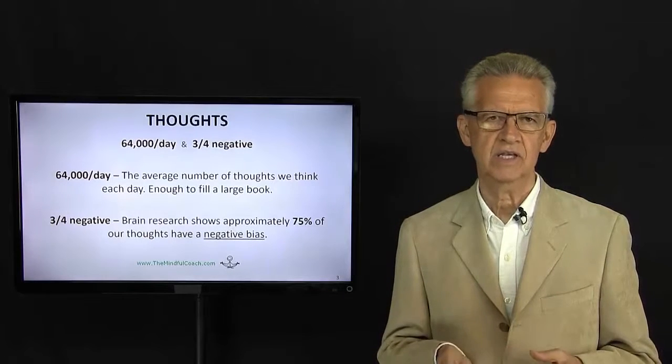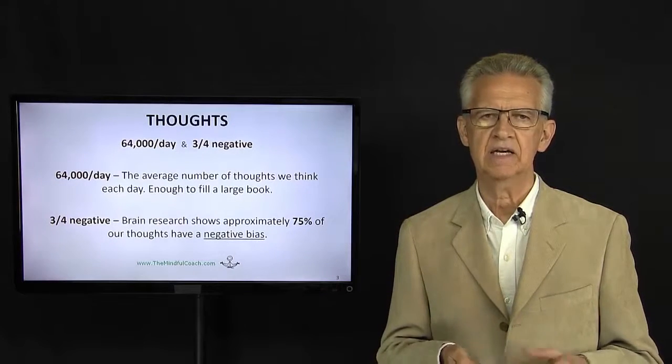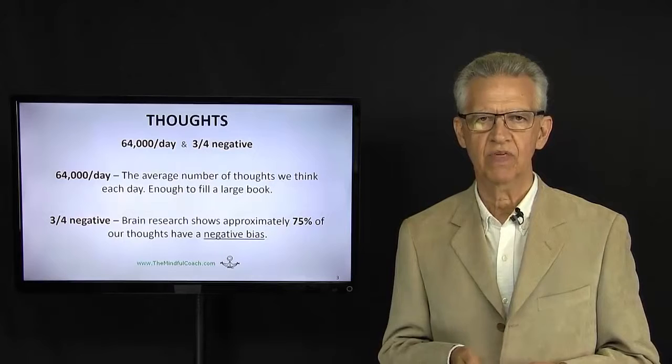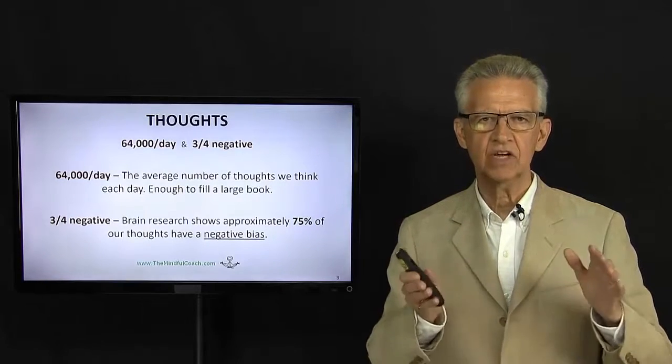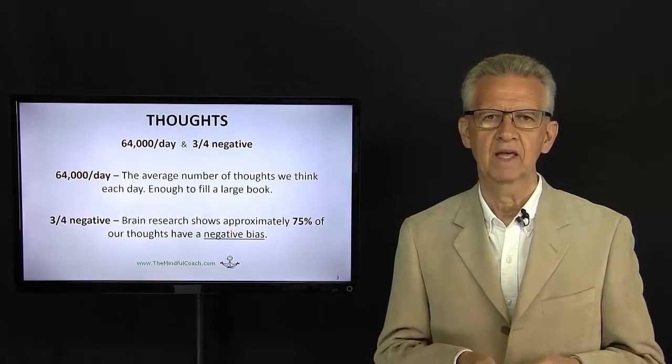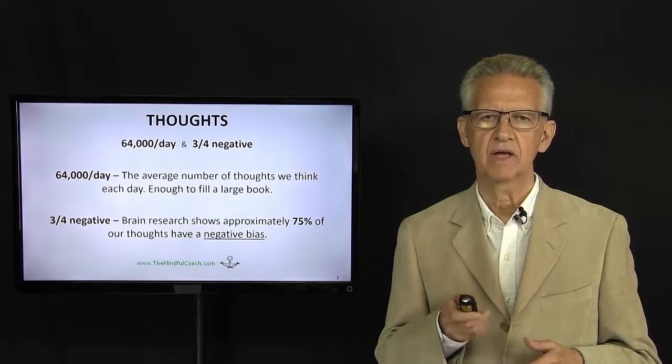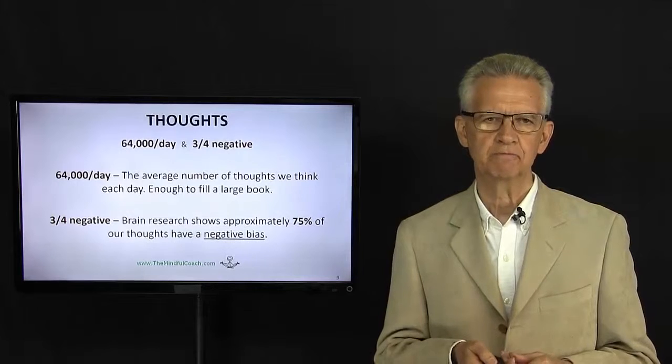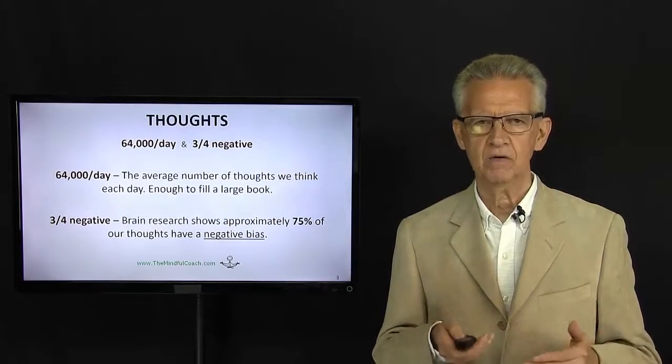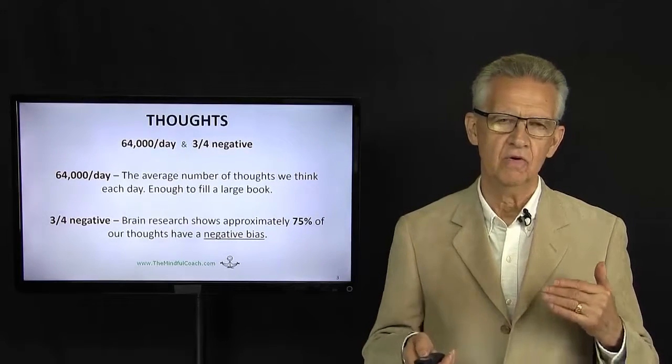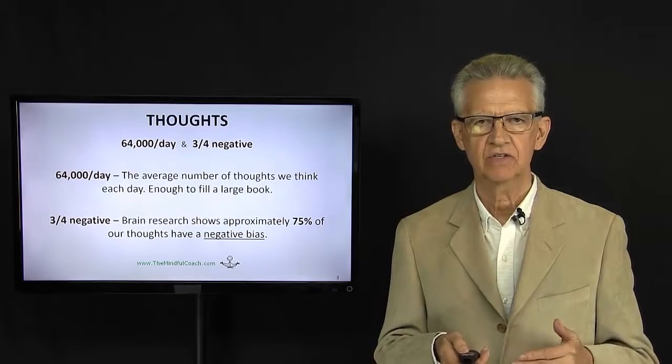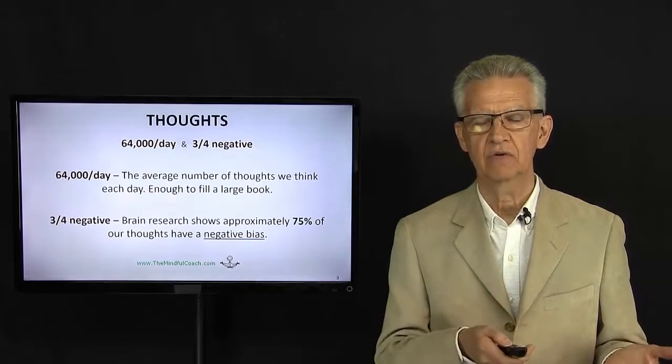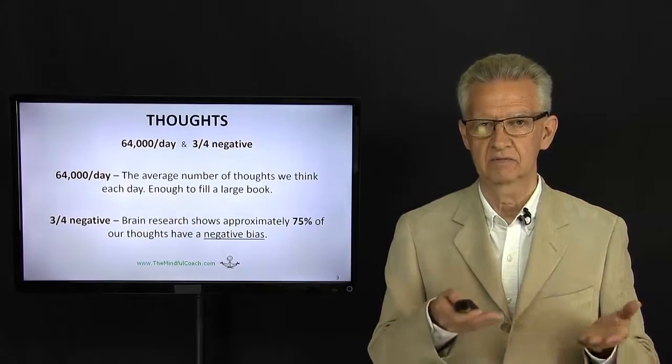New studies on the brain estimate that we think something like 64,000 thoughts per day, and that's enough to fill a large book. The other part of it is that about three quarters of those are negative. They have a negative bias. So if we aren't aware of our thoughts, chances are three to one that they do have somewhat of a negative component to them.